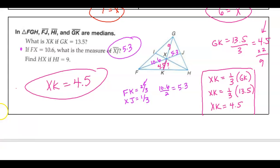And then the last one. Find HX, so H to X. That's our 2 thirds. If H to I, so the whole thing is 9. So remember, HX is equal to 2 thirds of the whole thing, of HI. So we know HX is equal to 2 thirds of HI is 9. So 2 thirds, 2 divided by 3 times 9 is equal to 6.